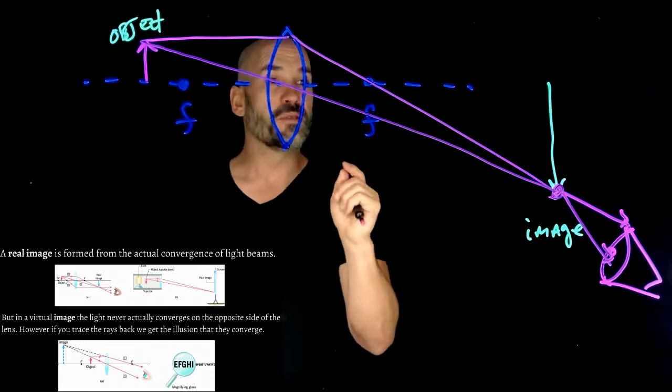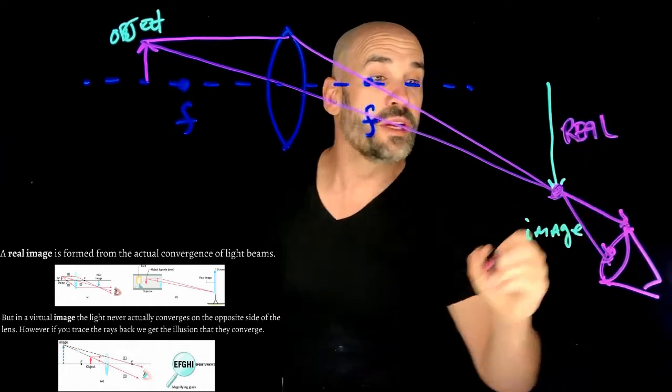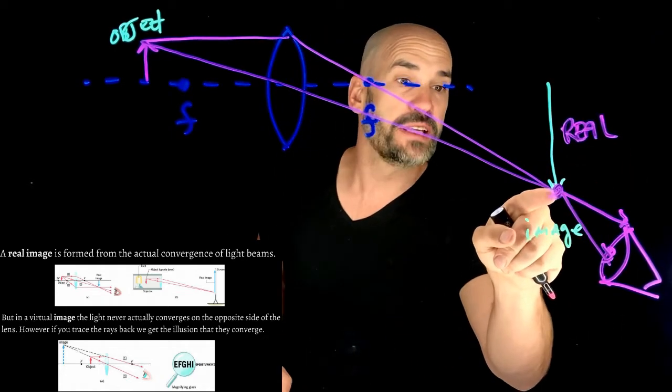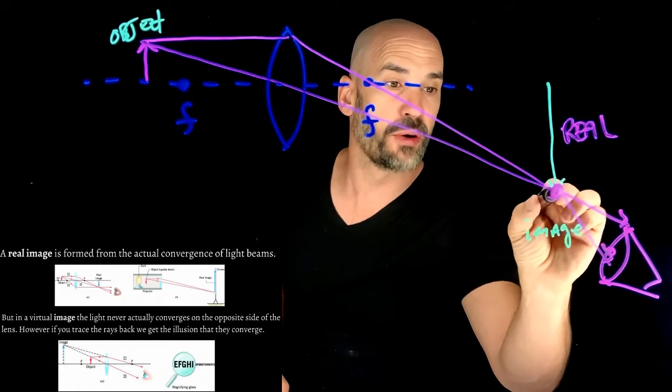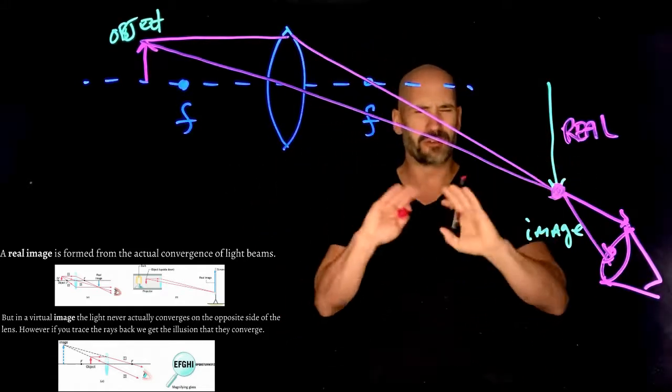Now this is what we call a real image. And why is it real? It's real because it's actually light coming, emanating from this point that is getting into your eyes.